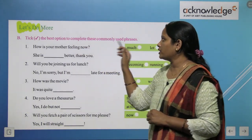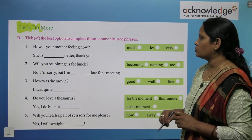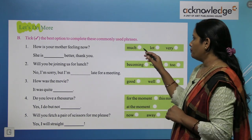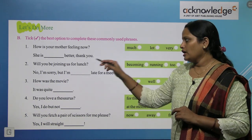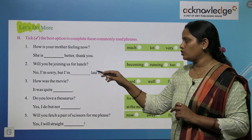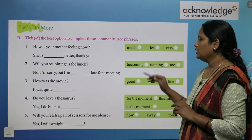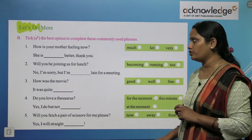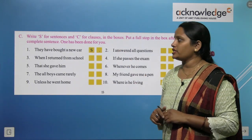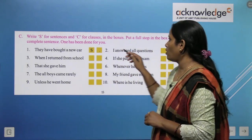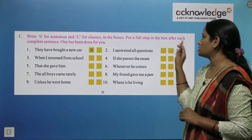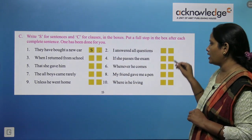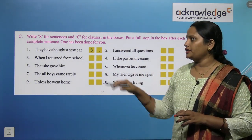Next, take the best option to complete these common-use phrases. For example: 'How is your mother feeling now?' — 'She is much better, thank you.' And: 'Will you be joining us for lunch?' — 'No, I am sorry, but I am running late for the meeting.' The rest is your homework. Also, write S for sentence and C for clause in the box, and put a full stop after each complete sentence.